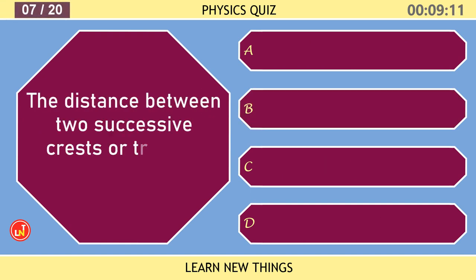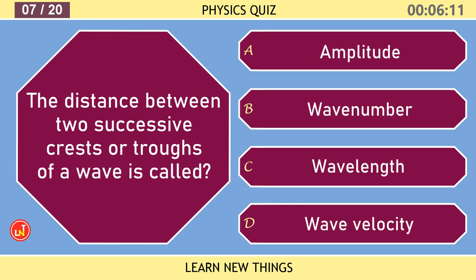The distance between two successive crests or troughs of a wave is called? Wavelength.